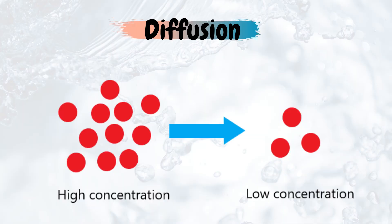Sometimes it happens for these particles to spread out and separate, moving from an area of high concentration where there are many particles to an area of low concentration where there are fewer particles. You can imagine this in a diffuser or even a humidifier, where the particles move from an area of high concentration to an area of low concentration.